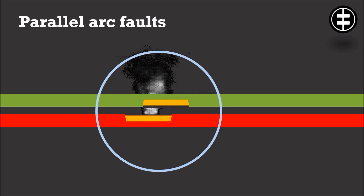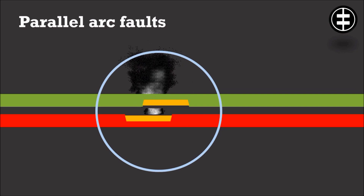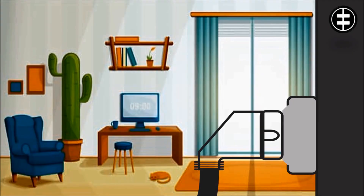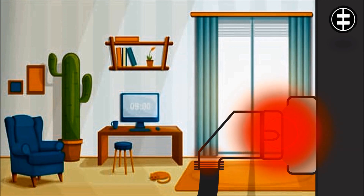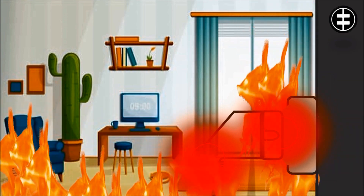In parallel arc faults, substantial current flows between two conductors, with leakage current generating electrical arcs finding the shortest path to flow, which will gradually carbonize the insulating material. The third type is arc to earth, which happens between a phase and earth cable. For all types, when heat created by the arc fault is significant enough, the cable insulation, plugs, and connectors could all catch fire, which could easily spread to other materials in the room.